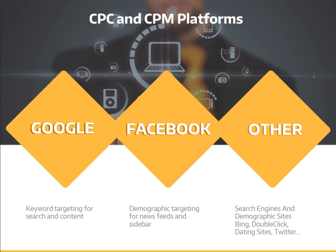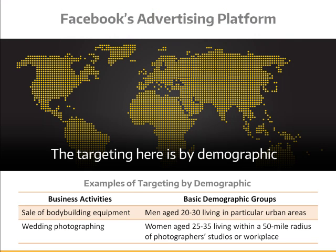When you're using AdSense, whether for CPC or CPM campaigns, part of that education will be identifying the keywords you need to target. On Facebook, it's a little different. Like Google, Facebook also accepts both CPM and CPC campaigns, but most of the campaigns run on the site are CPC. The targeting here isn't by keyword, but by demographic. You'll be able to identify the kind of people you think are most likely to buy your product.